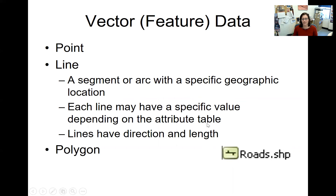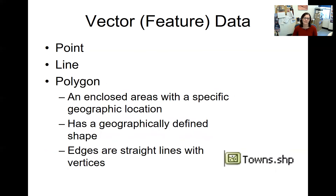A line also has specific geographic locations. In GIS, all lines — and also the edges of all polygons — are made up of straight line segments between vertices. Any line in your dataset can have the same kinds of attributes as a point. The extra thing that lines have that points don't is direction and length, so you can measure distance with a line.